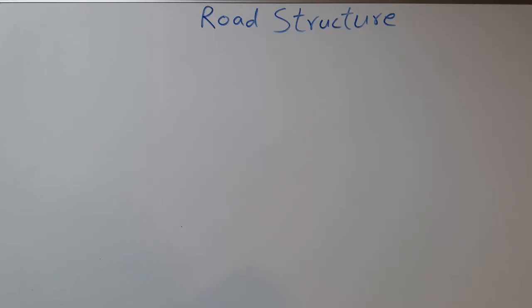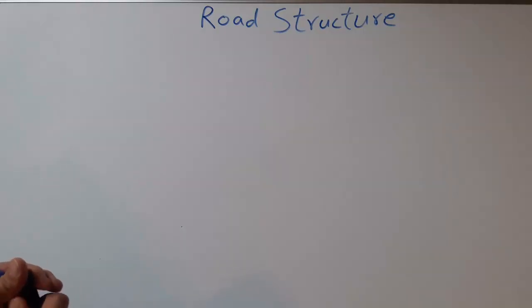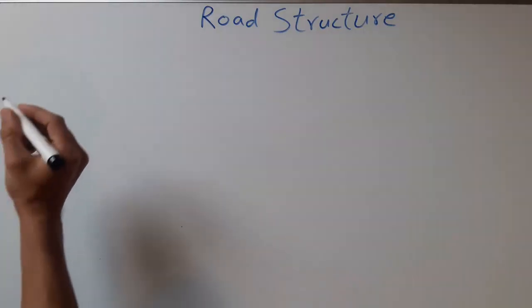Hello and welcome to my YouTube channel. In this video I'm going to explain about road structure. Normally we have two types of road: one is flexible pavement and the second one is rigid pavement. Both types of road have similar geometry and similar layers. First of all I'm going to explain about flexible pavement.